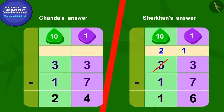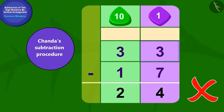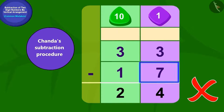Children, can you tell whose answer is correct? Let us first see Chanda's answer. Can you tell us if this answer is right or wrong? Chanda's answer is wrong. While subtracting, Chanda subtracted three ones of 33 from seven ones of 17.